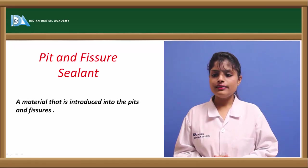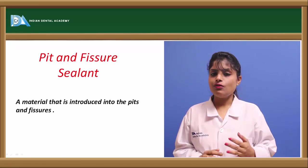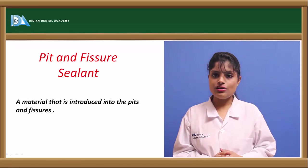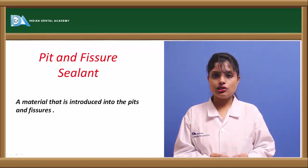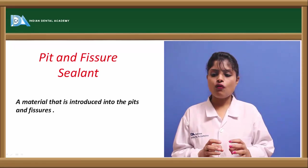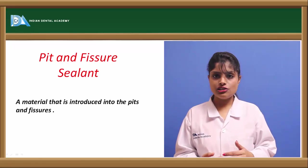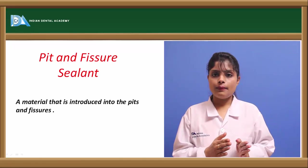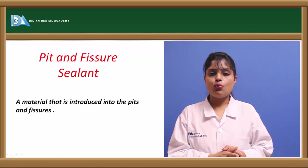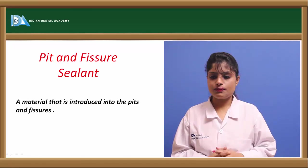Now let us know what is a pit and what is a fissure. A pit is generally a pinpoint depression which is present at the coalescence of various developmental groups. And a fissure is generally a cleft or a depression which is present at the fusion of different cusps.